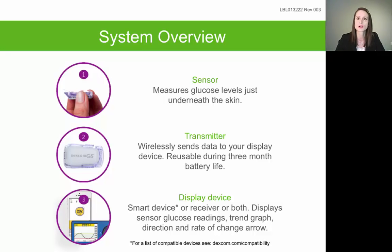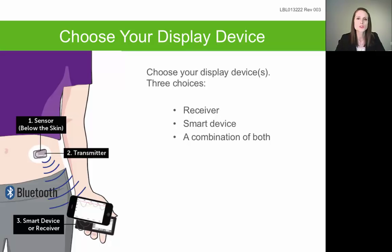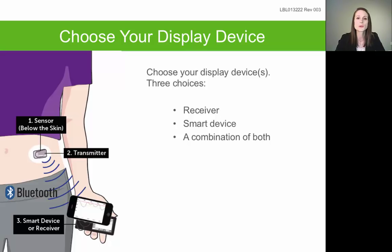We have a list of compatible smart devices on our website at Dexcom.com/compatibility. You can use just your Dexcom receiver, just a smart device, or a combination of both at the same time. You can also interchange between the two — for example, using your smart device during the day and your receiver at night or vice versa. Whatever display device you use, it obtains glucose information from the transmitter the same way: through Bluetooth technology. Both your transmitter and display device communicate via Bluetooth so long as they remain within 20 feet of each other.